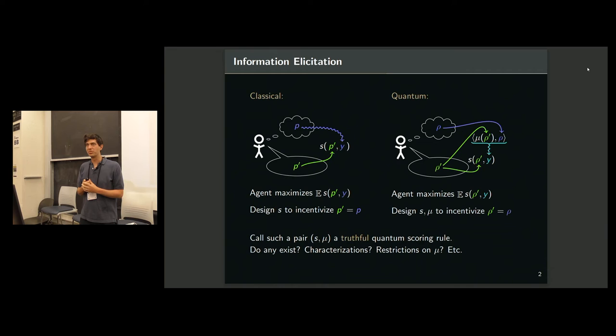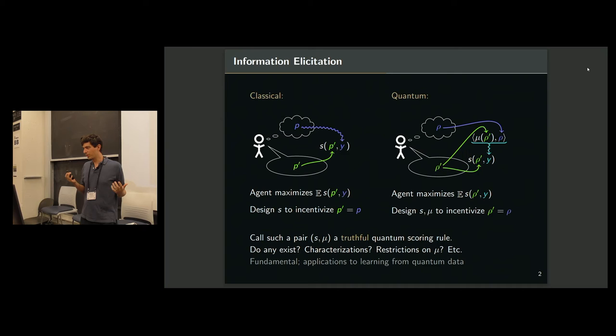Aside from being fairly fundamental questions for quantum information in this kind of principal agent setting, as Yifan mentioned, scoring rules are used in machine learning. And basically, for the same reason, you can use truthful quantum scoring rules to solve problems when you're learning from quantum data.